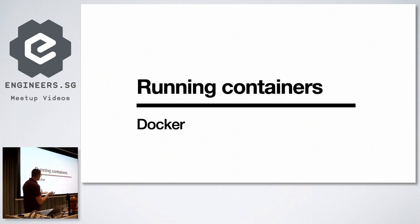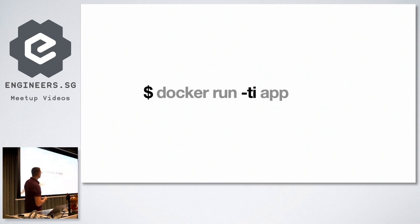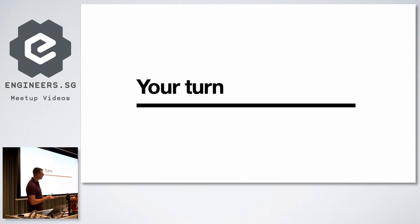For running Docker containers, we use 'docker run' with an extra flag -ti, which I like to remember as terminal and interactive — so I can play with the terminal inside the container. Then the name of the image I want to run, the same name from 'docker build -t'. So we run it and see the application running inside the container — exactly what you did before, but this time running from within a container.